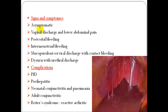Signs and symptoms of chlamydia presentation: asymptomatic, vaginal discharge, lower abdominal pain, post-coital and intermenstrual bleeding, mucopurulent cervical discharge, and dysuria. Complications in the future include PID, perihepatitis, neonatal conjunctivitis, adult conjunctivitis, and Reiter's syndrome.